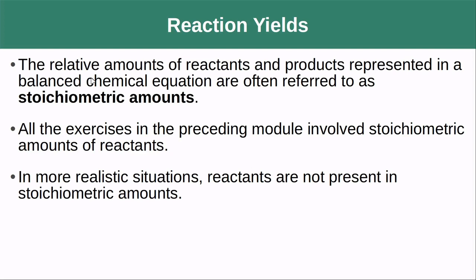So far we've been talking about the relative amounts of reactants and products represented by balanced chemical reactions. These are called our stoichiometric amounts — the amounts that are going to mix to give us a complete reaction. In actuality though, you're rarely going to have the correct stoichiometric amounts in your reaction mixture. Instead you're going to have a little bit more or less of one of the reagents than what would be ideal.